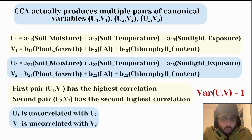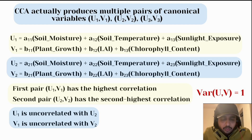What these coefficients tell us is very informative. For example, u1 equals a11 times soil moisture, plus a12 times soil temperature, plus a13 times sunlight exposure. If a11 is a large number, it tells us that soil moisture plays a very important role in explaining the plant physiological response. Each coefficient essentially gives the weight or importance of that variable in the overall relationship.